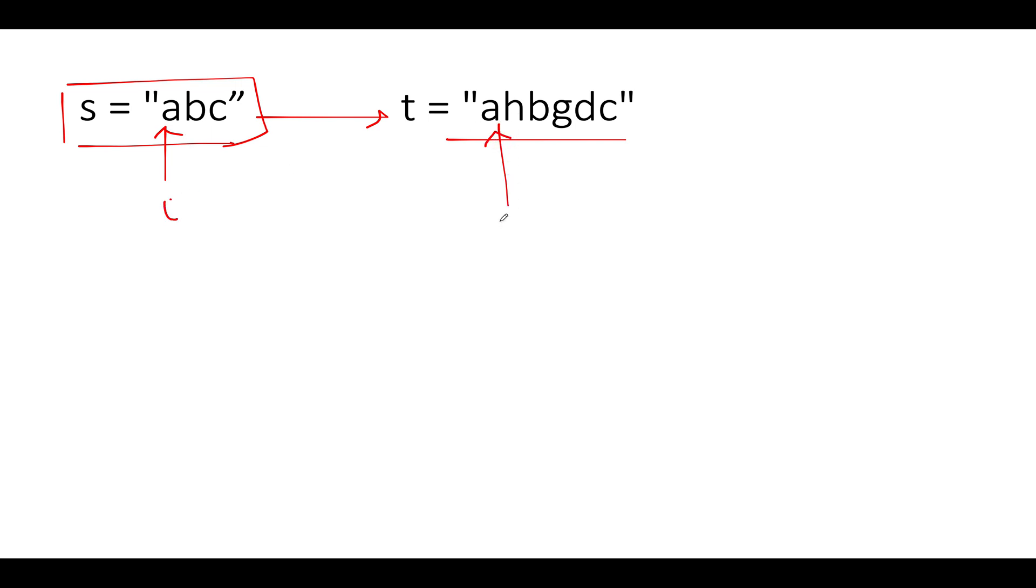What do we see first? The ith character in s happens to be equal to the jth character in t. As a result, we will increment both of them. So i points to b and j points to h. What are we going to do next? We will keep searching for b in t till the time the jth character in t matches with the ith character in s. So is h equal to b? It's not equal.